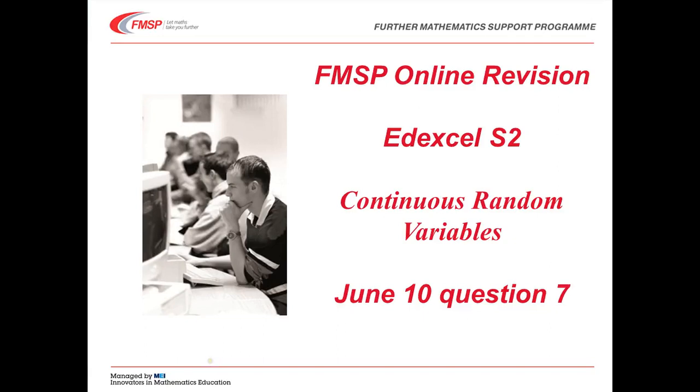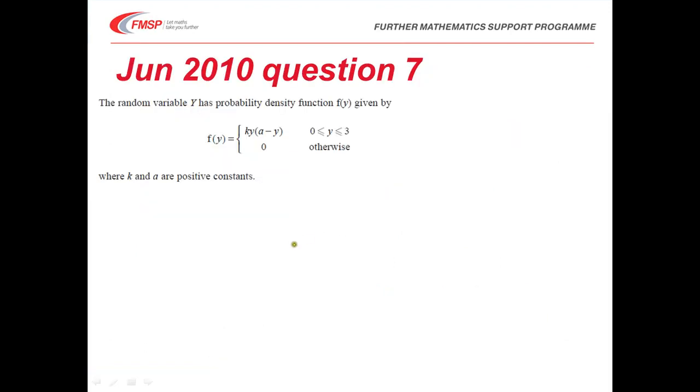In this recording we're looking at Edexcel S2 June 2010 question 7, focusing on continuous random variables. We have a random variable y with a PDF defined as shown, where the support goes from 0 to 3, and we're told that k and a are positive constants.